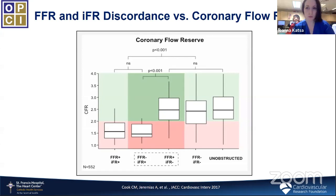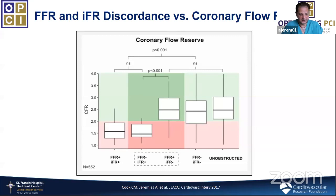On repeating FFR with borderline values — should you increase the dose of hyperemic agent? There is no good data that increasing the dose beyond recommended levels makes a difference. Keep things standardized. The standard recommendation: IV adenosine at 140 micrograms/kg/minute; intracoronary adenosine (which I use most of the time unless measuring CFR) — 100 micrograms bolus in the right system, 200 micrograms bolus in the left — shown to create maximal hyperemia with a minor side effect profile.